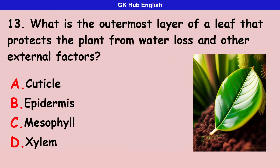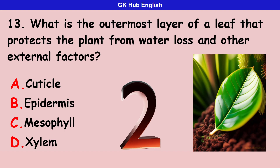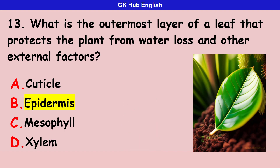Thirteenth question: what is the outermost layer of a leaf that protects the plant from water loss and other external factors? Option A is cuticle. Option B is epidermis. Option C is mesophyll. Option D is xylem. Correct answer is epidermis.